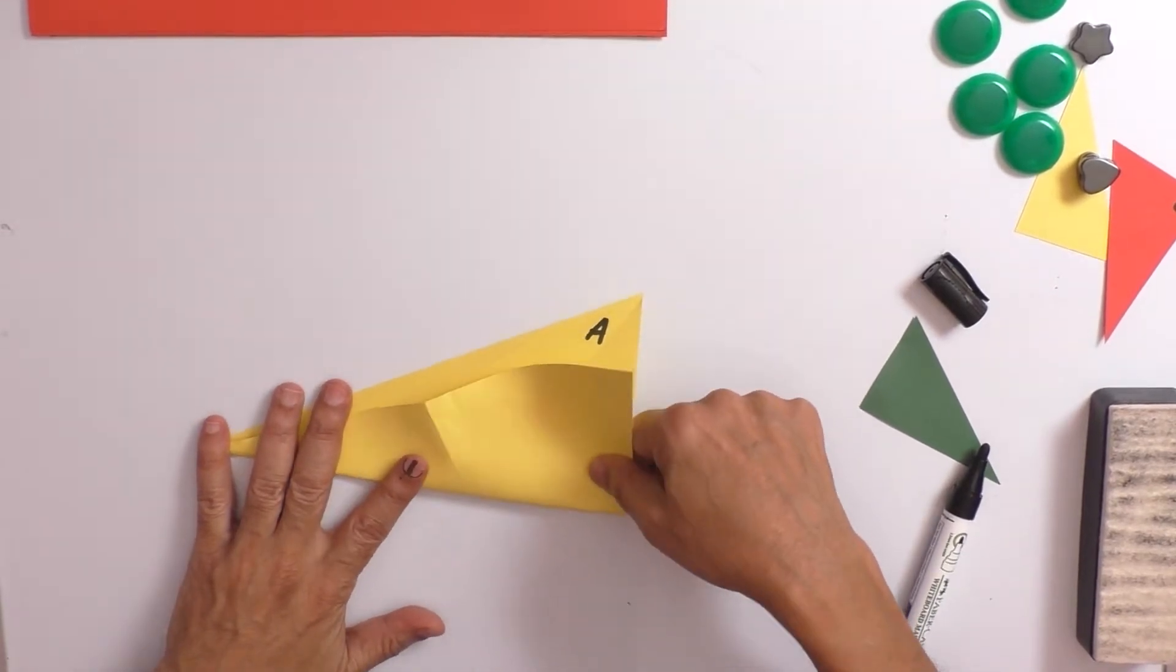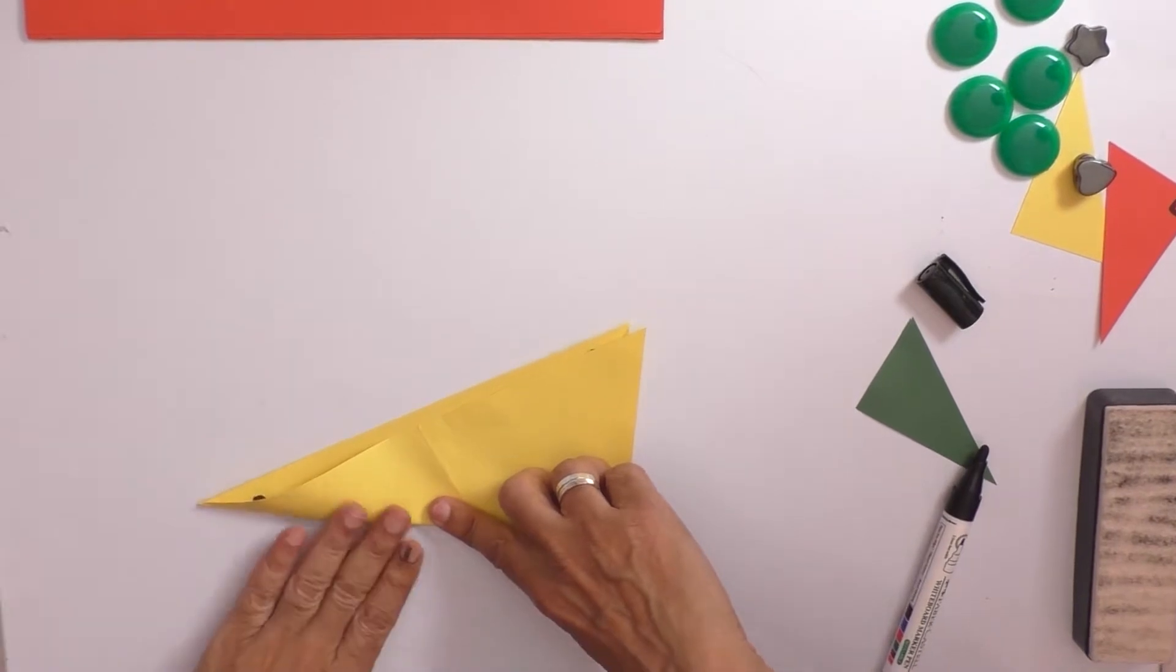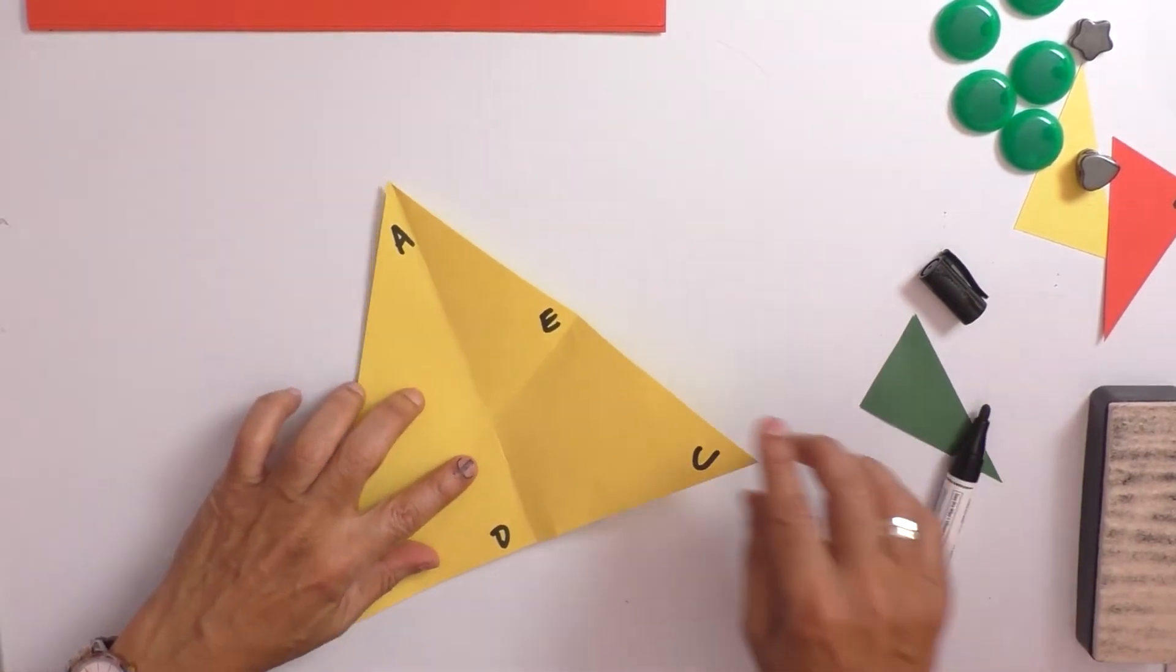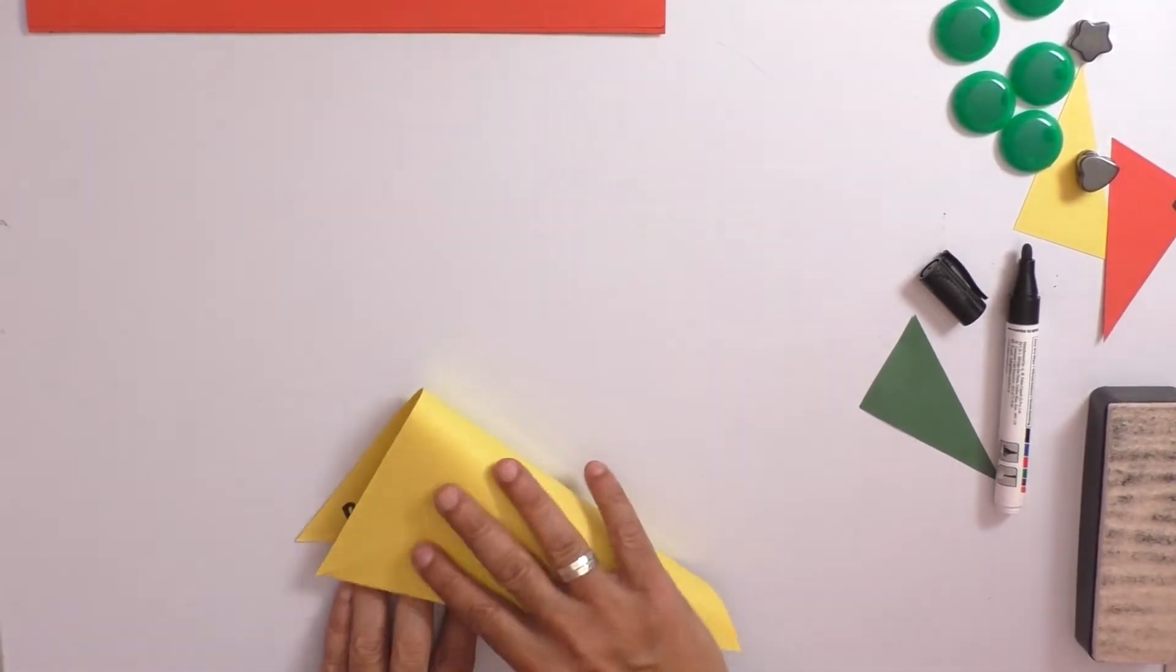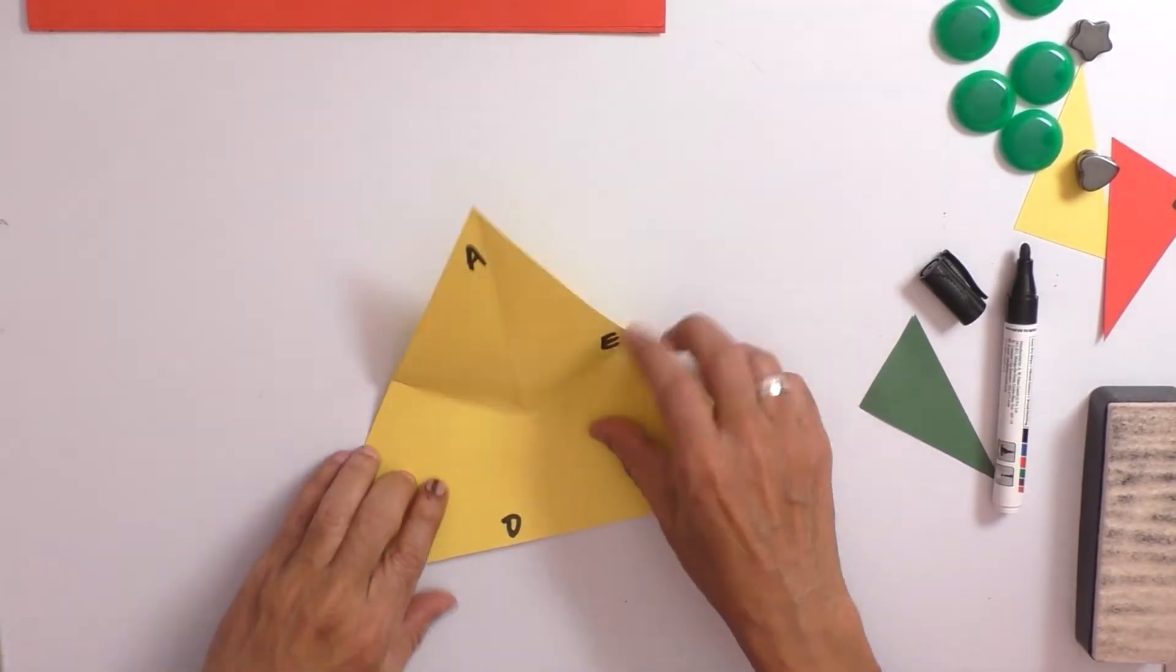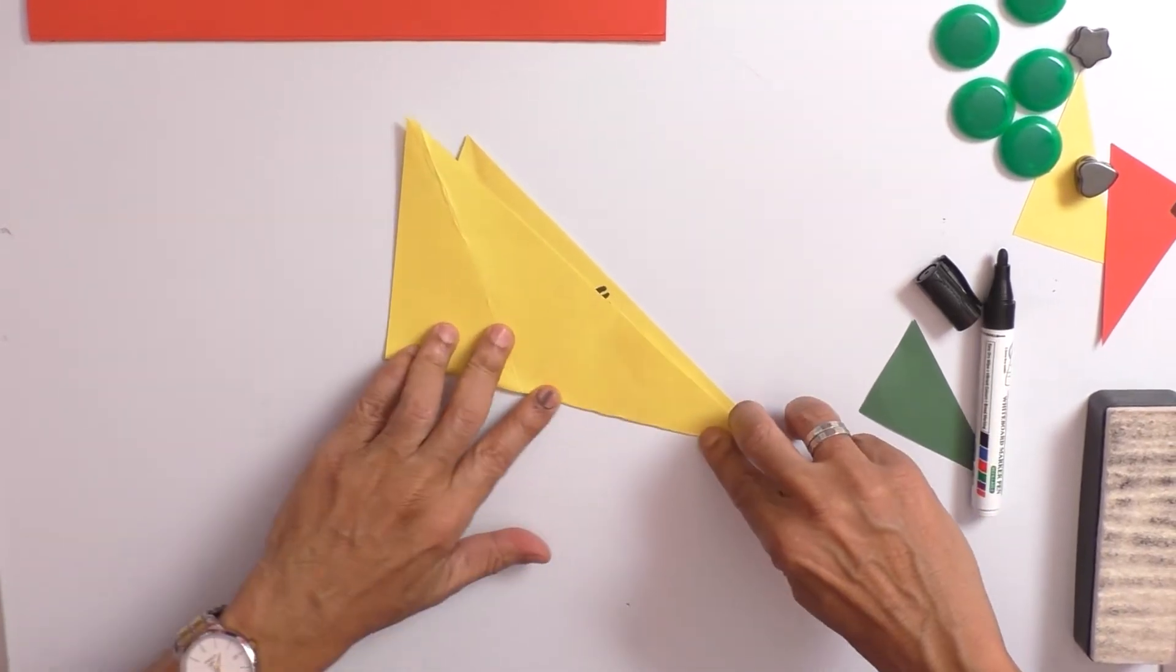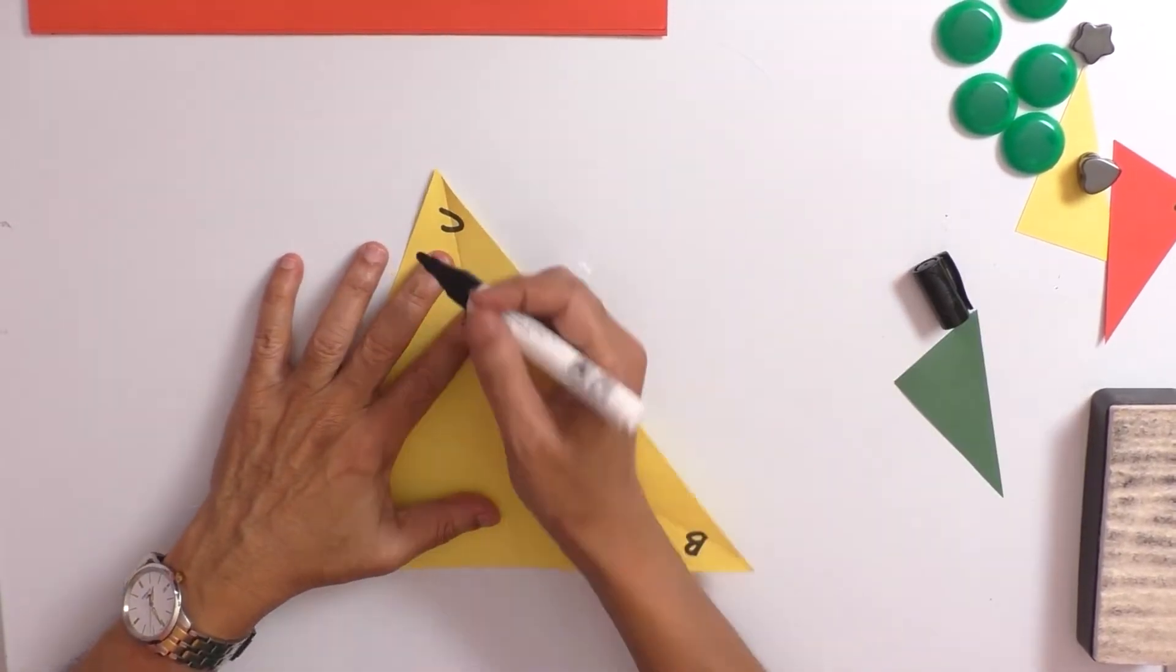If you have not seen the video on centroid, we recommend you please do that. We have explained that very clearly in that video. So BE is another median. And then for the side AB, we have to find the midpoint and connect it with angle C. The concept is very important.